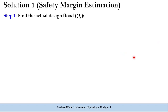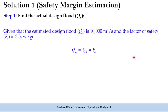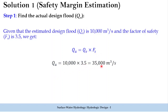Using this information, let us find out the actual design flood. The formula is: actual design flood QA equals QE (the estimated flood) multiplied by the factor of safety FS, which is 10,000 times 3.5, giving 35,000 cubic meters per second as the actual design flood.